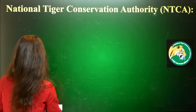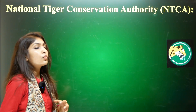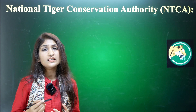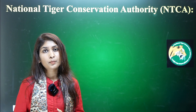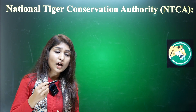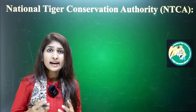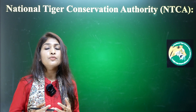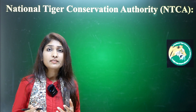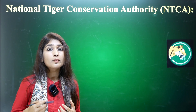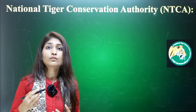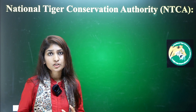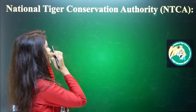India achieved almost a 161% increase in tiger population. Globally in the 2000s, there were only about 3,800 tigers, and being home to more than 70% of the world's tigers makes it India's responsibility to conserve them. The Royal Bengal Tiger alone makes up 50% of the total world tiger population.